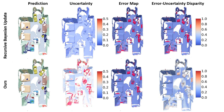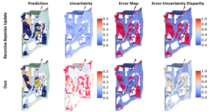Notice how recursive vision update on the top results in very overconfident maps, with pronounced error-confidence disparity on the right, while our pipeline on the bottom greatly reduces the disparity — both in cases where the mistakes are small and localized, and when the errors occupy a much larger space. In both cases, our method produces much better calibrated 3D outputs.